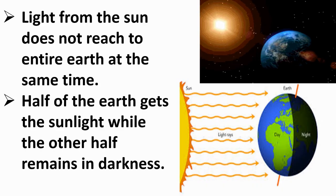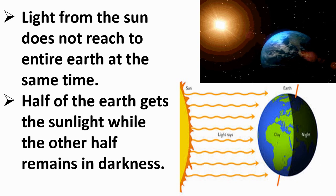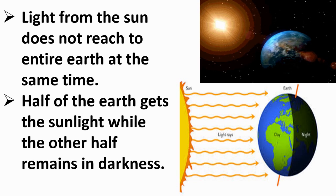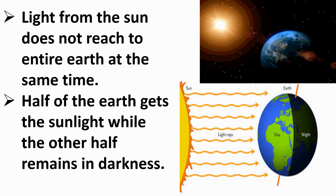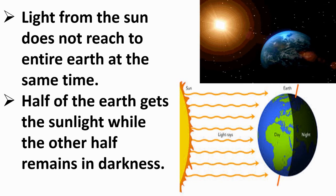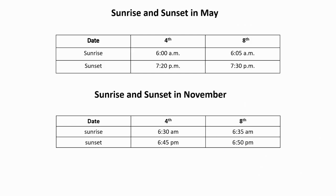We experience day and night every day. As we have learned, the Earth rotates as well as revolves — it revolves around the sun and rotates around itself. Because of this, the light from the sun does not reach the entire Earth at the same time. Half of the Earth gets sunlight while the other half remains in darkness.